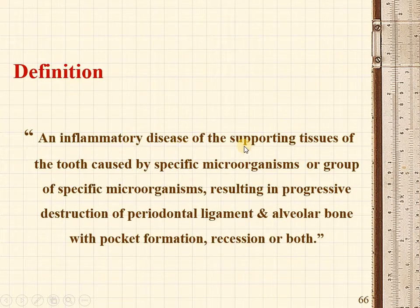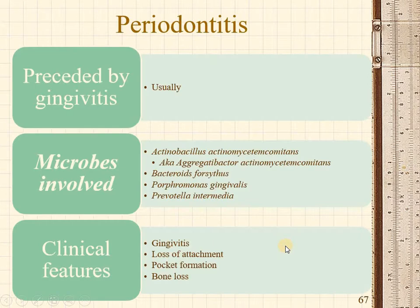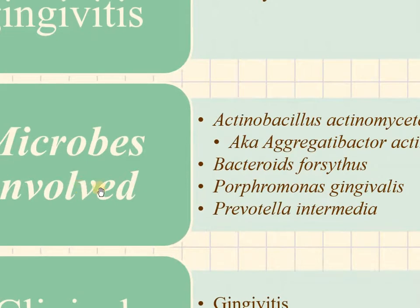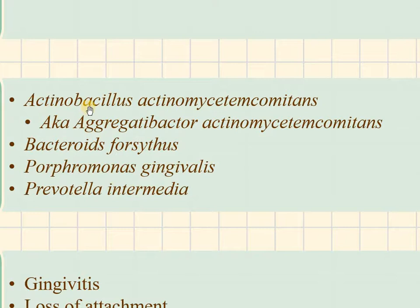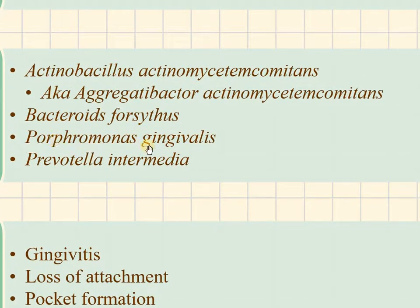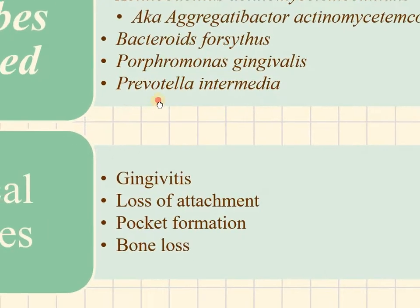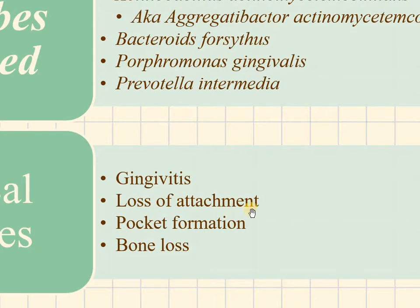Periodontitis is defined as an inflammatory disease of the supporting tissues of the tooth caused by specific microorganisms or a group of specific microorganisms, resulting in progressive destruction of the periodontal ligament and alveolar bone with pocket formation, clinically seen as recession or both. Periodontitis is usually preceded by gingivitis. Common bacteria involved include Aggregatibacter actinomycetemcomitans, Bacteroides forsythus, Porphyromonas gingivalis, and Prevotella intermedia. Clinical features include loss of attachment seen by probing, pocket formation, abscess, bone loss, and tooth loosening.